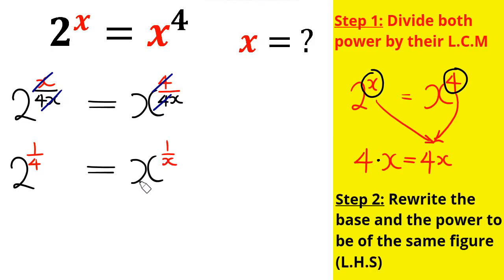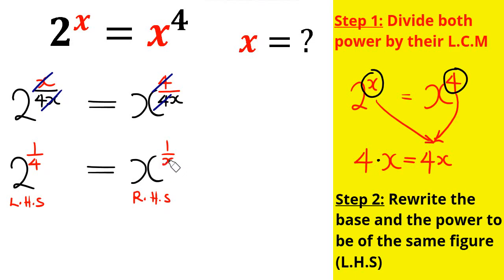Then x cancels with x, and 4 cancels with 4, so we are left with 2 raised by the power of 1 over 4 equals x raised by the power of 1 over x. What are we going to do next? That is step number two: rewrite the base so that both sides have the same form. On the right-hand side we can see we have the same variable x as the base and the same x in the denominator of the power.